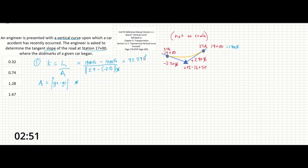We can write the units as feet per percent. I'm not certain that's the standard notation in transportation engineering since that's not my personal background, but writing out units can help you remember what you're solving for. So we have found K, the rate of vertical curvature — the rate of change of grade over distance — from one station to the next.